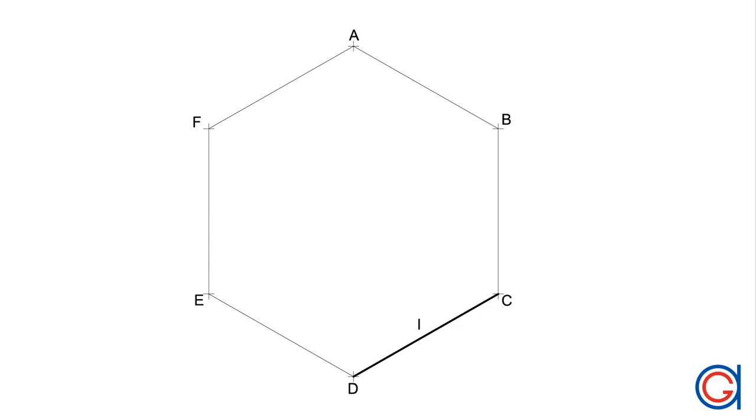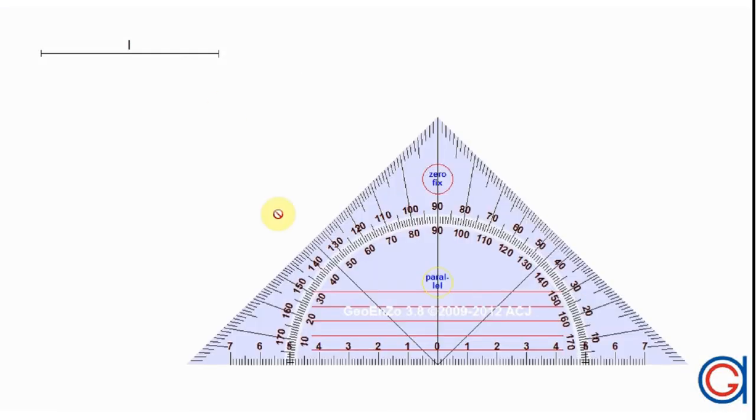So the first step is we are going to draw a regular hexagon. There are two methods to draw regular hexagons. One method is by knowing the length of one side. The regular hexagon is the only regular polygon that the side is equal to the radius of its circumscribed circle.